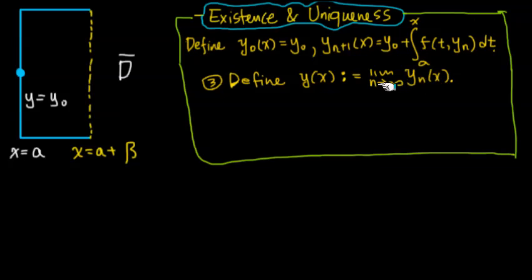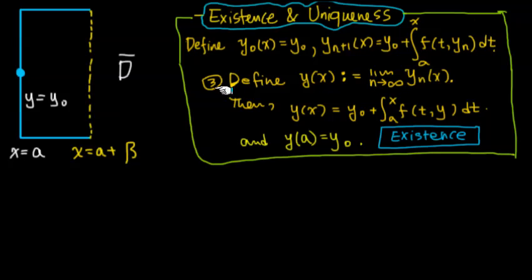For any x value, if you send n to infinity, this will become a number all the time. So that gives you a functional relation - x and whatever the convergence value, that's the function value. The statement of part 3 is that this function we define actually satisfies the differential equation.